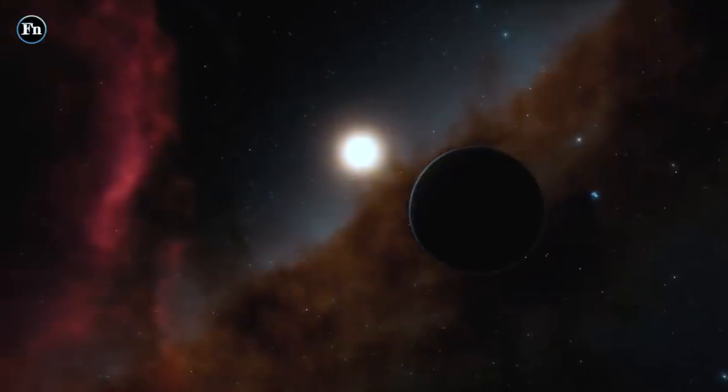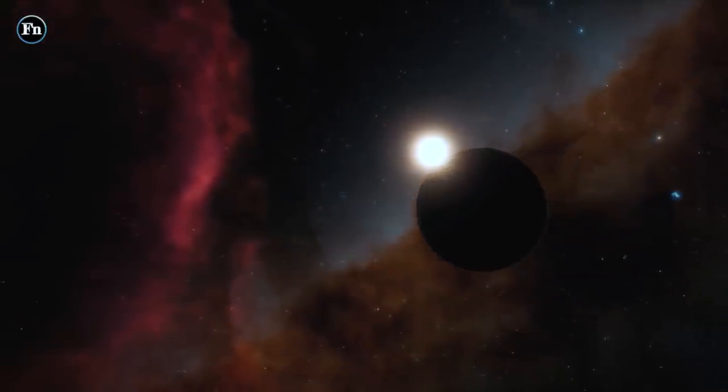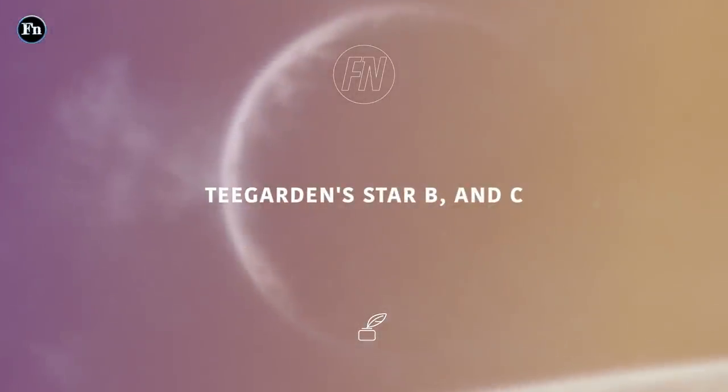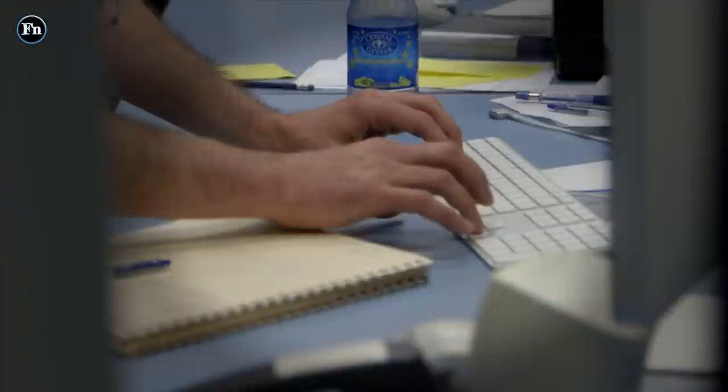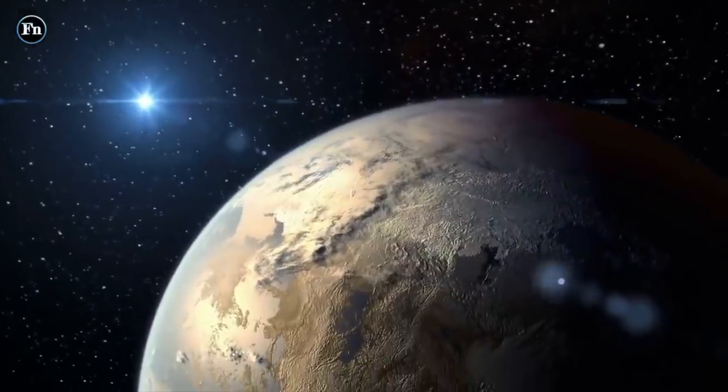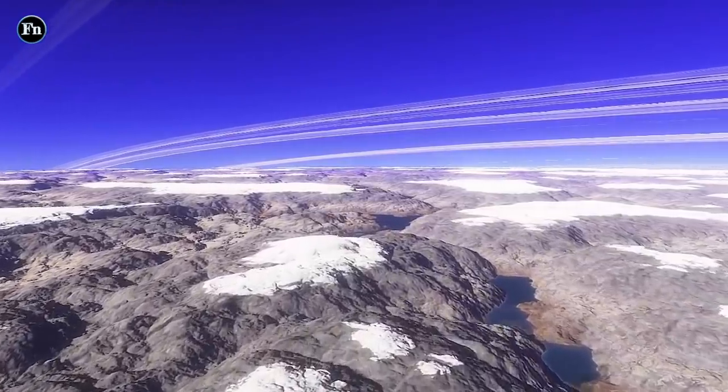In this new study, the researchers focused their efforts on two of those exoplanets: Teegarden star b and c. As part of the study, they noted that both are close to their star with orbits of just 4.9 and 11.4 days, putting them both firmly in the Goldilocks Zone.